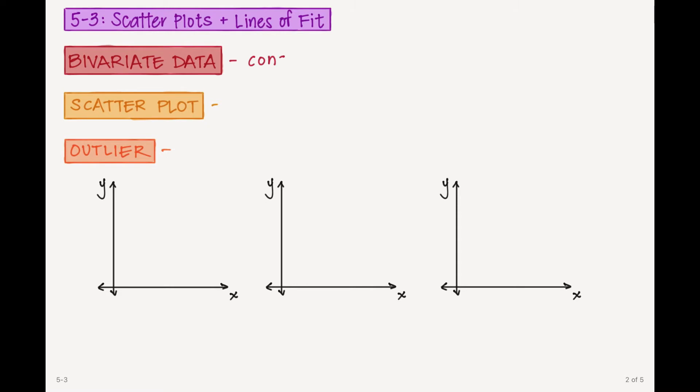And so what we're going to start with is bivariate data. This consists of pairs of values, and if you were going to plot these on a graph you would typically get what's called a scatter plot. This is a graph of your bivariate data.